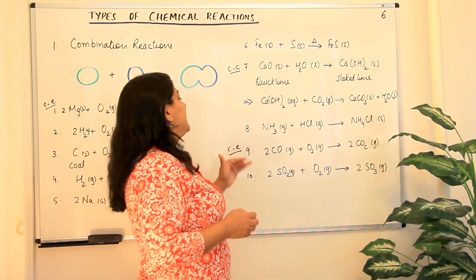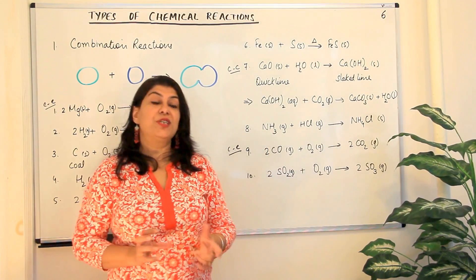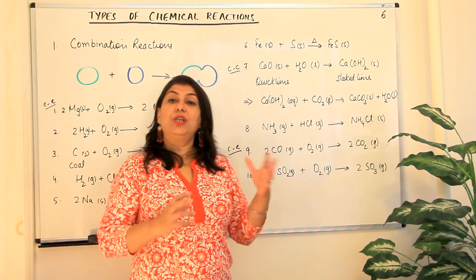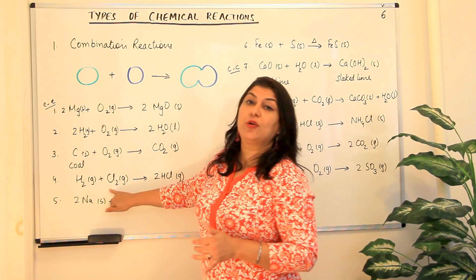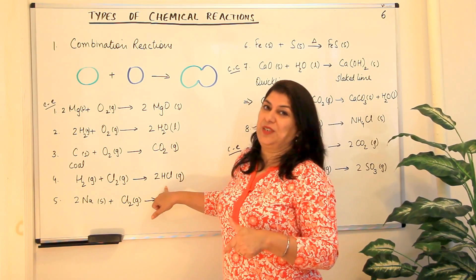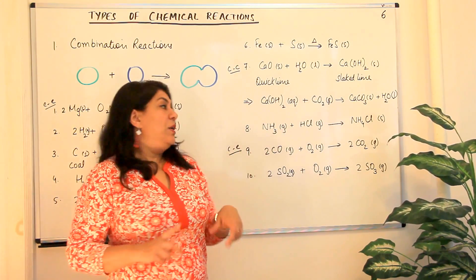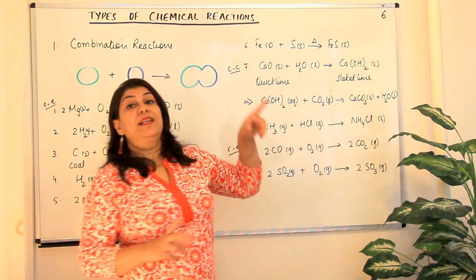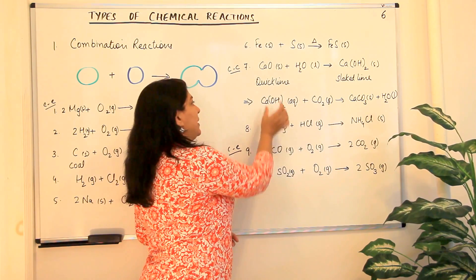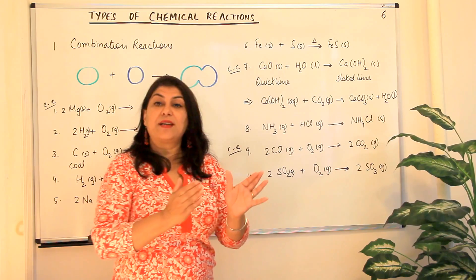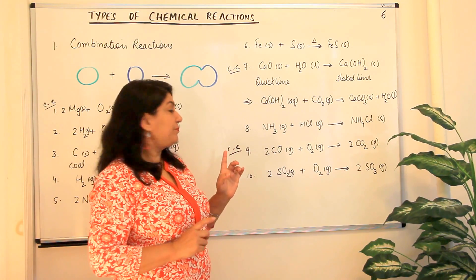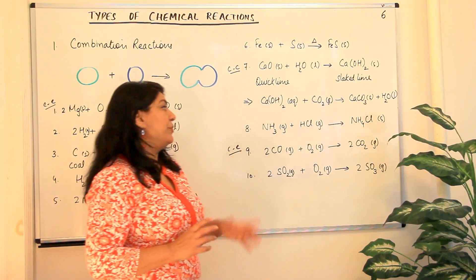The next example also involves two compounds: ammonia gas combines with hydrogen chloride gas — not hydrochloric acid, since it is in the gaseous state — and results in the formation of ammonium chloride. There were two reactants and only one product, therefore this is also a combination reaction.